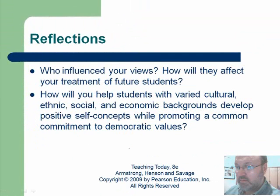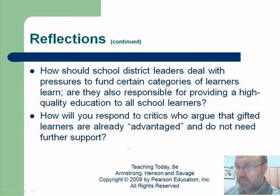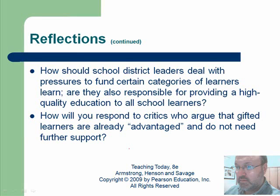To reflect: Who influenced your views? How will you affect your treatment of students? How will you help students with very different cultural, ethnic, and social backgrounds? How should school district leaders deal with pressure to fund certain categories of learners? How will you respond to critics who argue that gifted learners are already advantaged? My bias, with a special ed background, was that the enrichment things provided to gifted students would have benefited all kids — and it bothered me that being more intelligent entitled some kids to more enrichment, even though other kids would have benefited from it greatly. So that's chapter five — diversity.